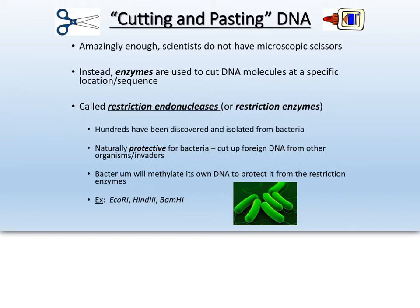These are all naturally occurring enzymes that we harvest from bacteria. Scientists believe these are probably the bacterial immune system — protection for bacteria so that if foreign DNA, basically a virus, finds its way into a bacterial cell, the bacteria can use these restriction enzymes to chop up that viral DNA so it's no longer useful. What a bacterium will do is temporarily methylate its own DNA to keep it from getting chopped up by the restriction enzymes, and then take those methyl groups back off.